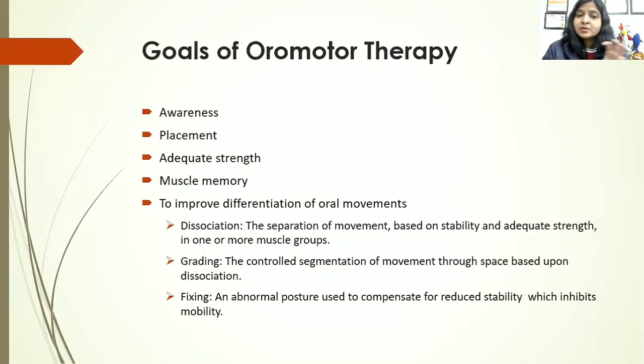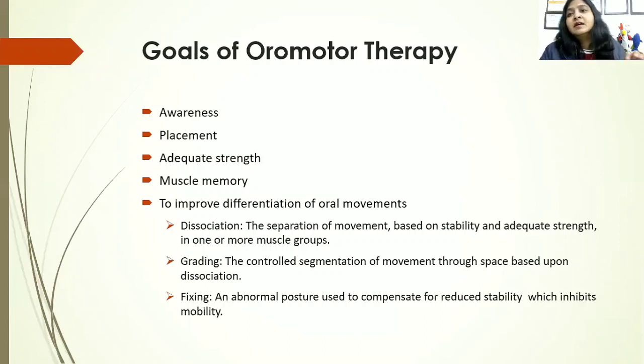Grading is segmented movements and fixing is an abnormal posture. If I'm not able to grade arm movements, I'll fix my arm straight and move my whole body forward to pick up the glass, taking the help of bigger muscles. In the mouth also, I will take the help of other muscles — using lips and other face muscles to stabilize the jaw so I can talk. All these fixings are something we try to avoid so that the child can speak clearly.